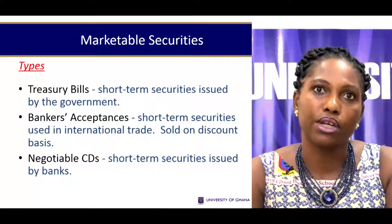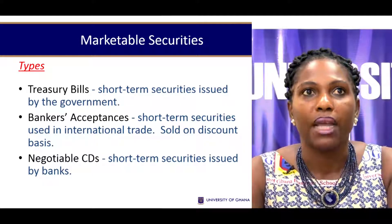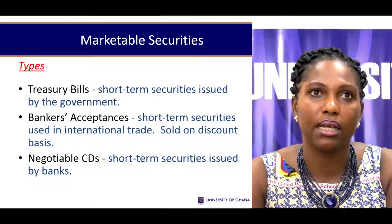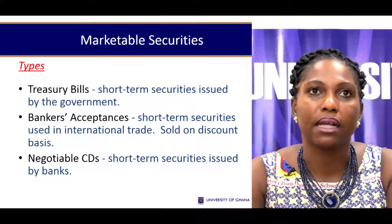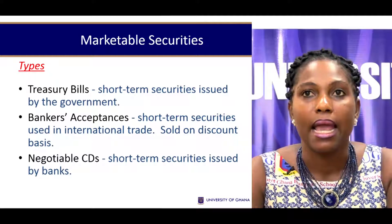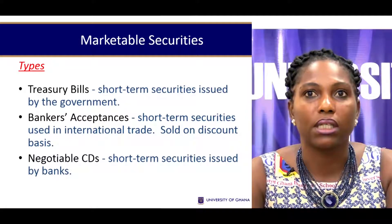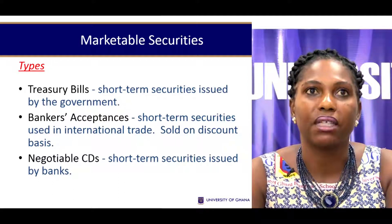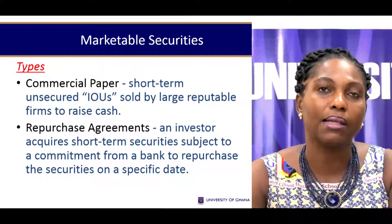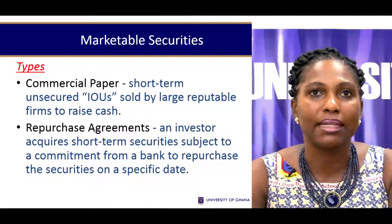There are several types of marketable securities a firm may consider for excess cash. Treasury bills are short-term securities issued by the government and among the safest investment vehicles. Bankers acceptances are short-term securities used in international trade and can be sold at a discount on the secondary market. Negotiable certificates of deposit are short-term securities issued by banks, similar to fixed deposits. Commercial papers are short-term unsecured IOUs sold by reputable firms to raise cash, typically with a lifespan of up to 270 days.